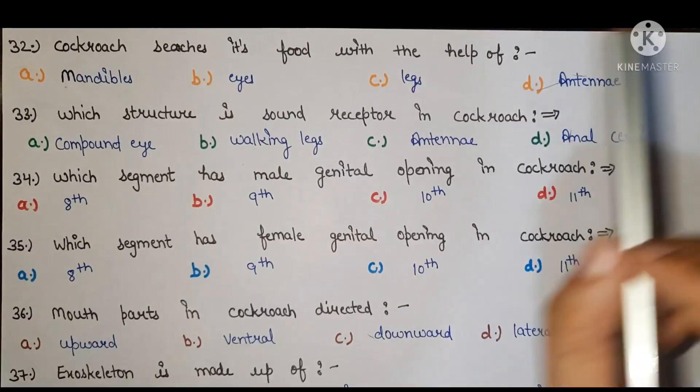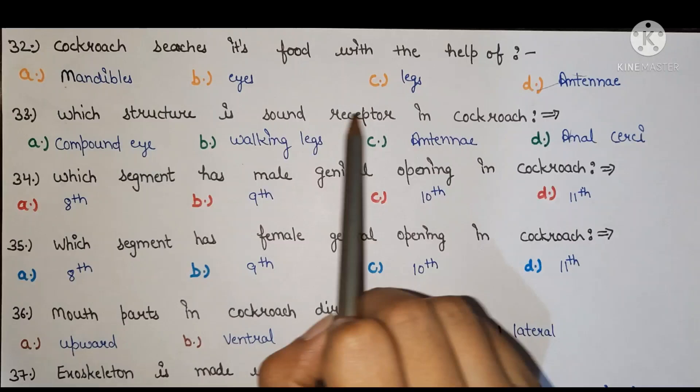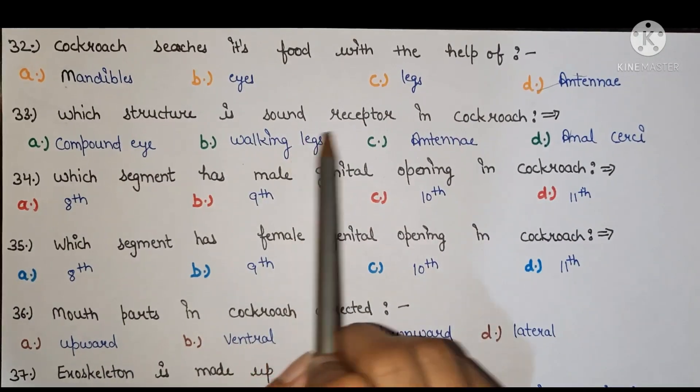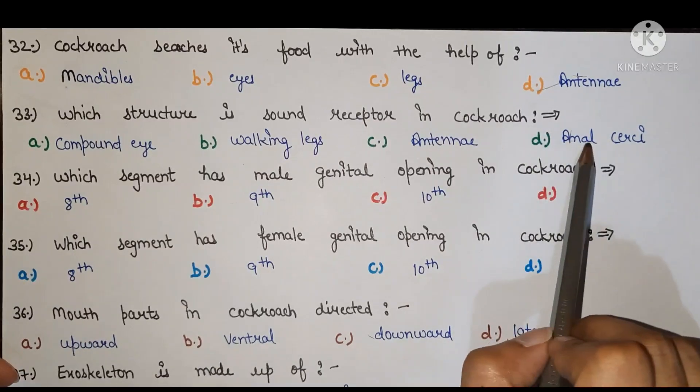Next, which structure is sound receptor in cockroach? A compound eye, B walking legs, C antenna, D anal cerci. Right answer is D anal cerci.